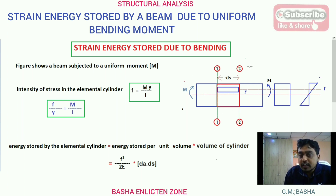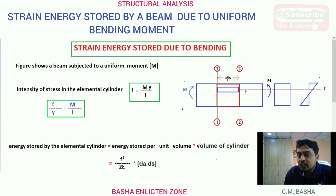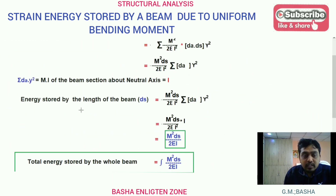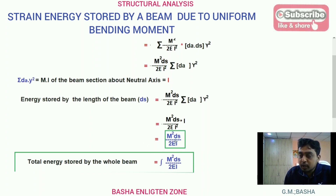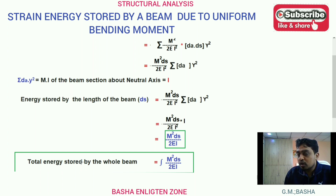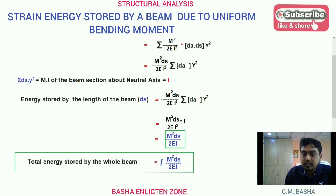In the last lecture itself, over the overall length of the beam, we found the value for the small elemental length ds. The strain energy stored for that elemental length is equal to M squared ds by 2EI. After obtaining that, we take the small length to the total length of the beam to get the total energy stored by the whole beam.